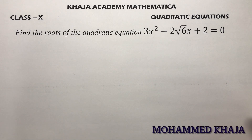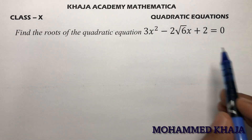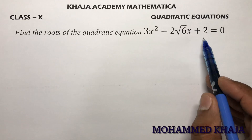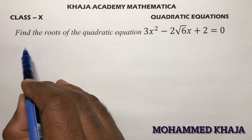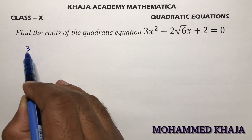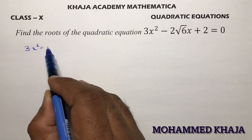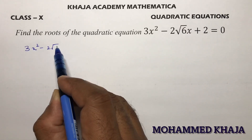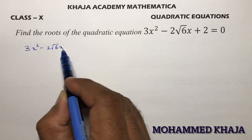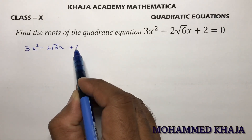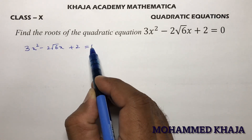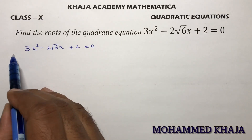Find the roots of the quadratic equation 3x² - 2√6x + 2 = 0.